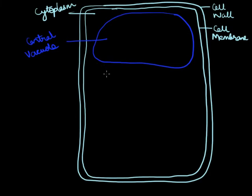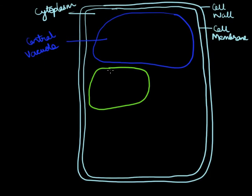The next organelle is very specific to plant cells — that is the chloroplast. Chloroplast is the reason why plants are able to do photosynthesis. Chloroplast is a double-membrane organelle, which means it contains two membranes. We have put the first membrane; let us put another one inside. Make sure not to join these two lines at any place — maintain a gap because there is something called an inter-membrane space between these two membranes.